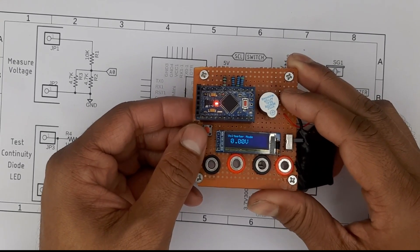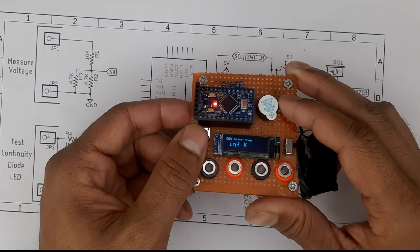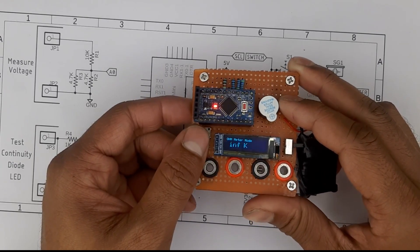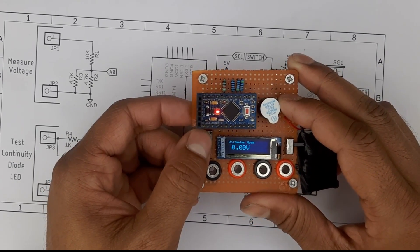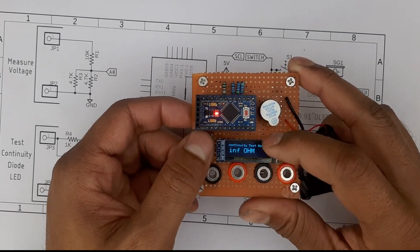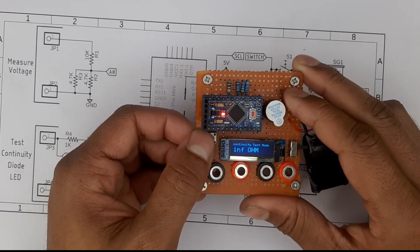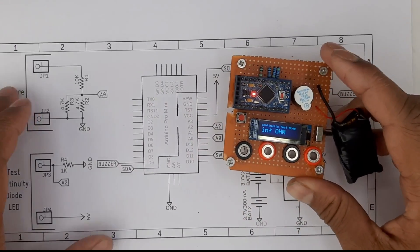If you press the switch it is in diode test mode. If you press it again it's in resistance mode where you can measure resistance. This is the continuity test mode right here. This repeats again and again.